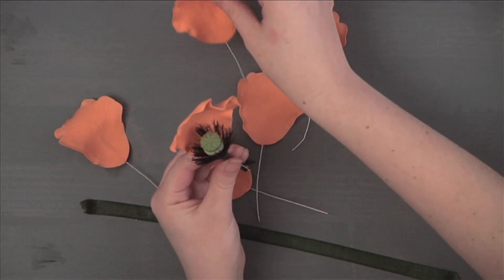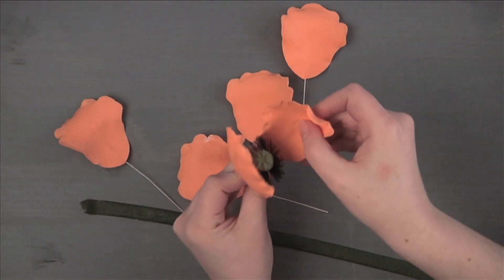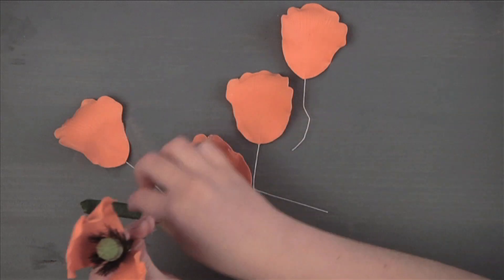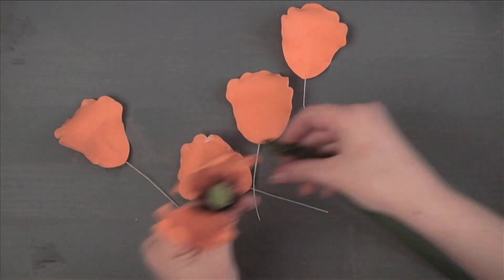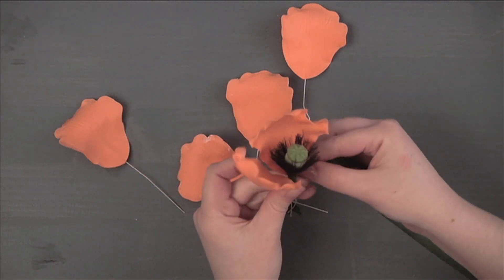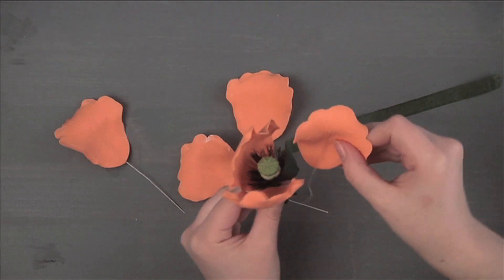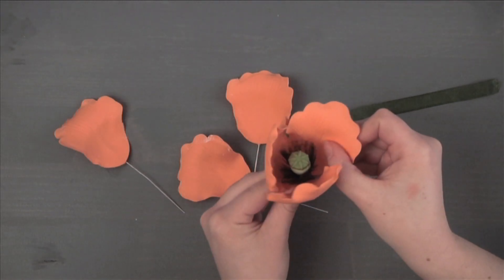Tape the two inner poppy petals to the poppy center positioned opposite each other. Tape the four outer petals underneath and between the inner petals.